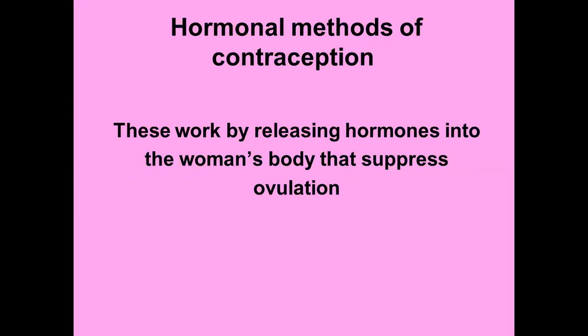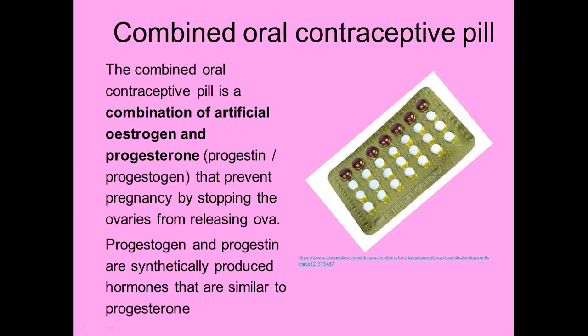We've finished barrier methods and are moving on to hormonal methods of contraception. These work by releasing hormones into the woman's body, and these hormones suppress ovulation. You should be able to tie that up with your knowledge of FSH, LH, progesterone, and estrogen. The first kind is the combined oral contraceptive pill — the first kind of pill developed.